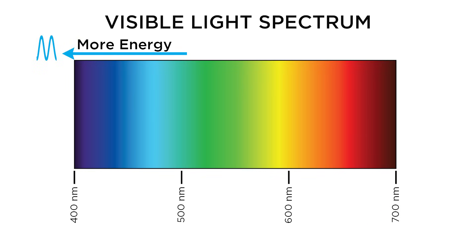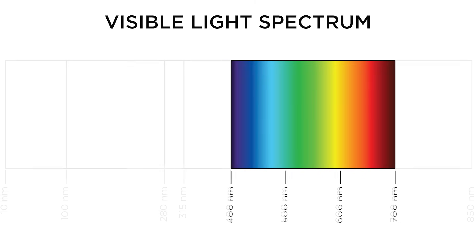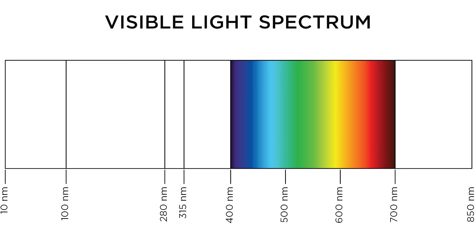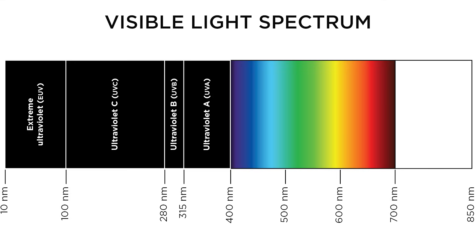Traveling left on this graph towards blue, each photon or particle of light has more and more energy. Moving right towards red, each light wave possesses less energy. As you get right outside of the visible spectrum, below 400 nanometers, you have ultraviolet light.